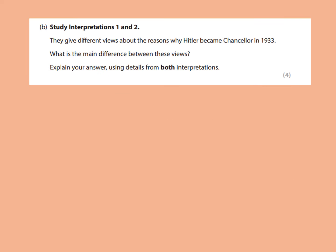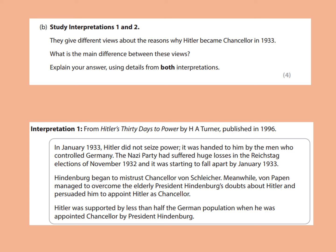I've taken this question from the June 2022 exam. Interpretation one reads: In January 1933, Hitler did not seize power — it was handed to him by the men who controlled Germany. The Nazi party had suffered huge losses in the Reichstag elections of November 1932, and it was starting to fall apart by January 1933. Hindenburg began to mistrust Chancellor von Schleicher. Meanwhile, von Papen managed to overcome the elderly President Hindenburg's doubts about Hitler and persuaded him to appoint Hitler as Chancellor. Hitler was supported by less than half of the German population when he was appointed. Key views here: Hitler did not seize power — it was handed to him; and von Papen's persuasion of Hindenburg was the deciding factor.